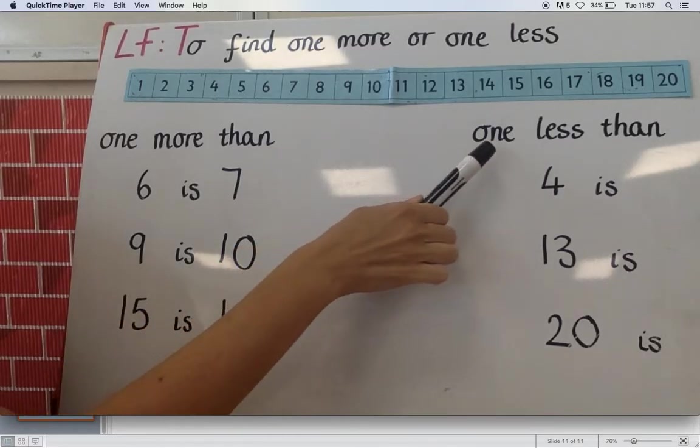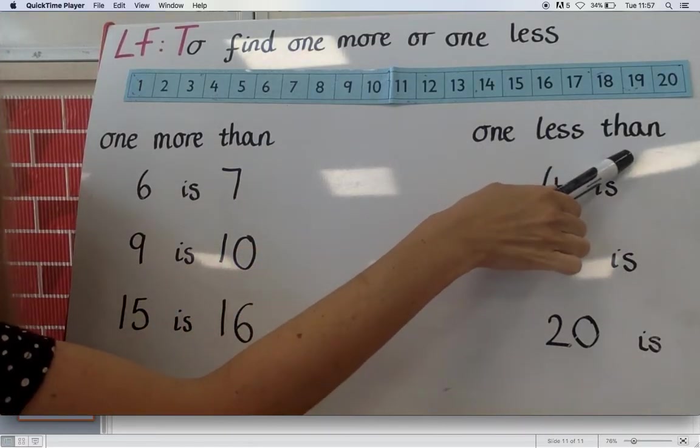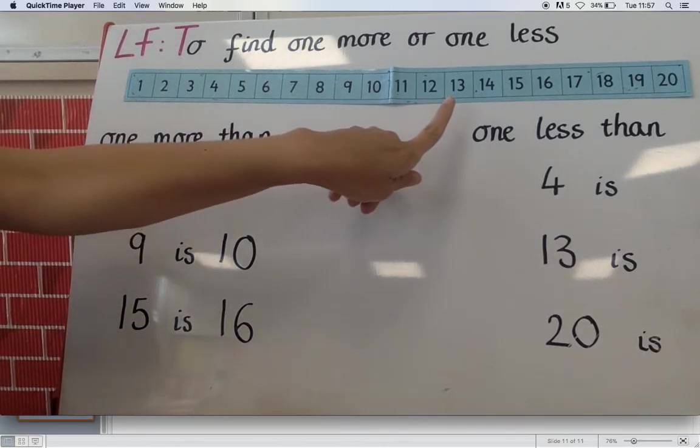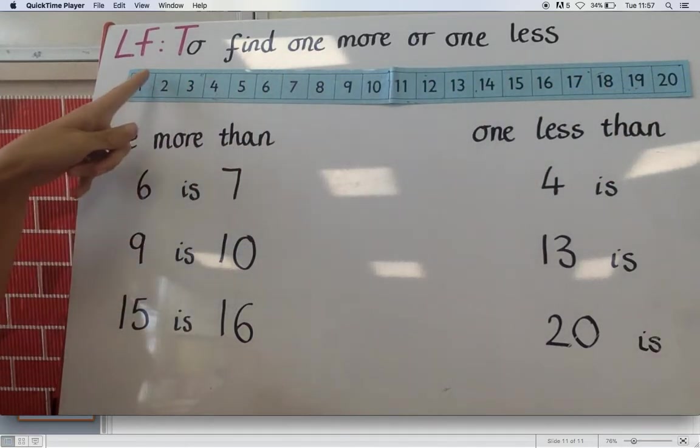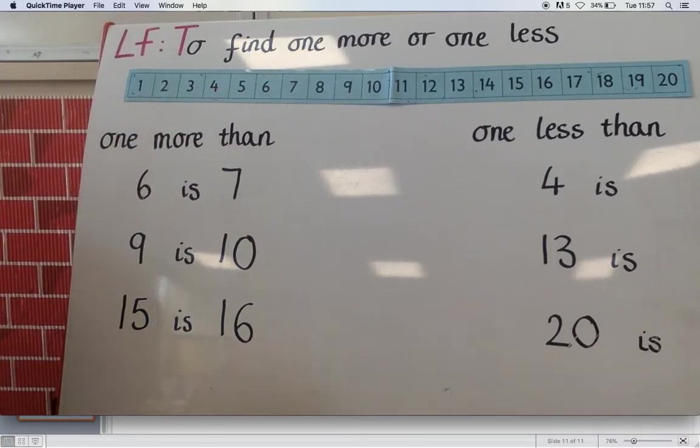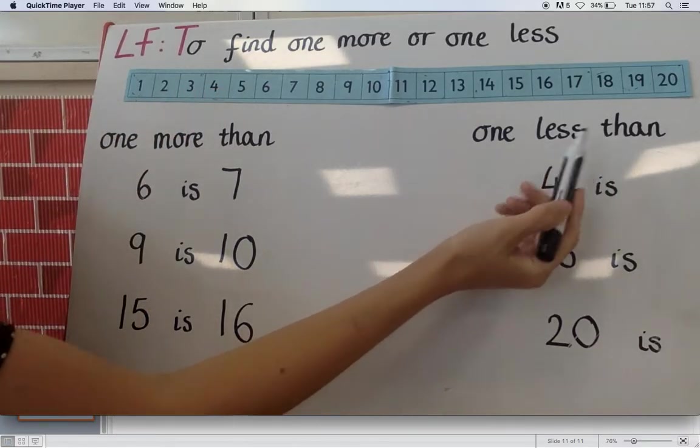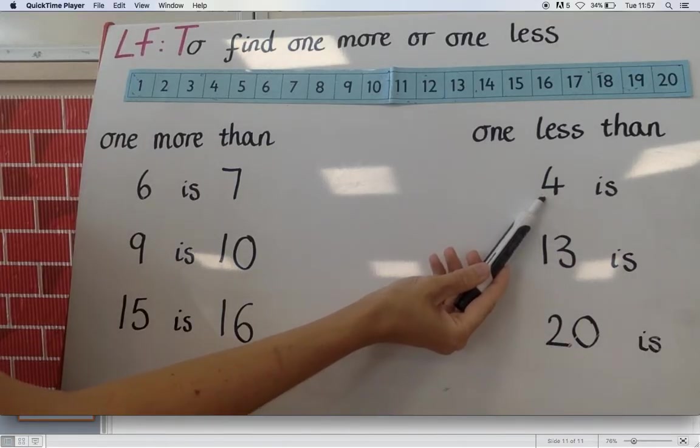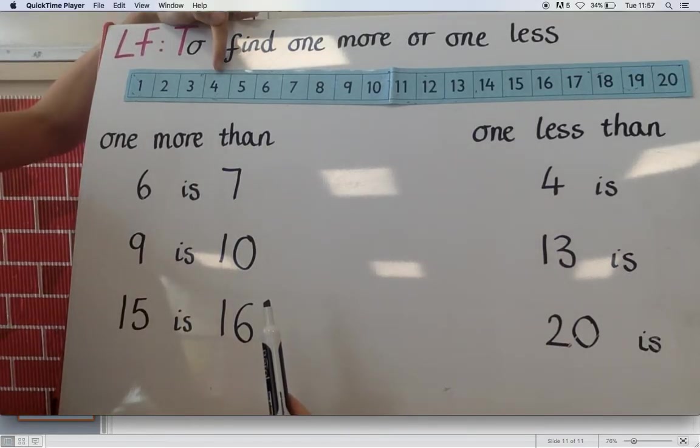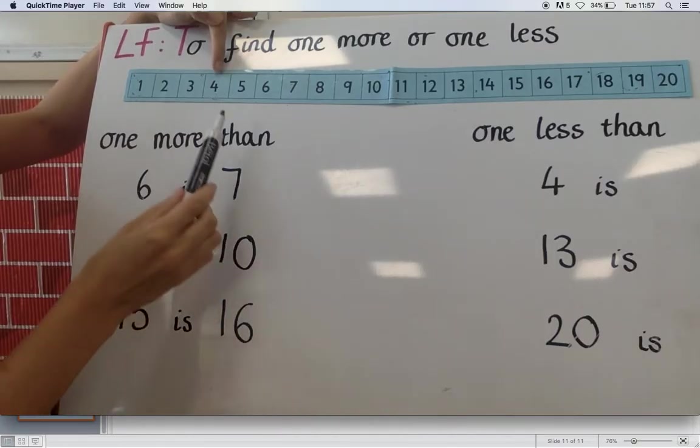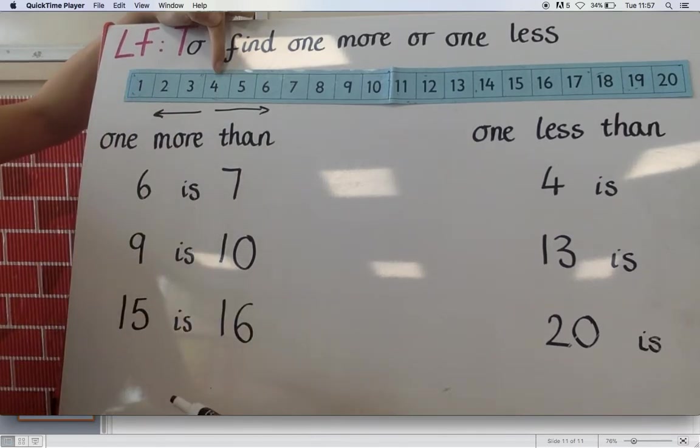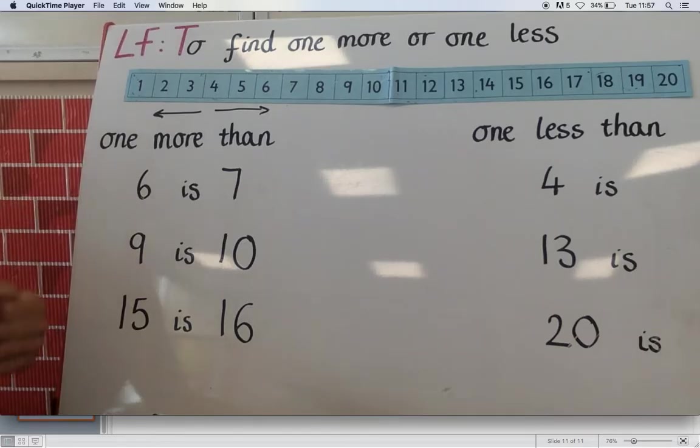Now here it's one less than. So it's less. It's going to be getting smaller. So instead of going this way we're going to come back. We're going this way on our number line. So one less than four. Exactly the same method. Find your number first. Four. One less than four. We're not going this way anymore. We're going this way. So one jump this way. One less than four is three.